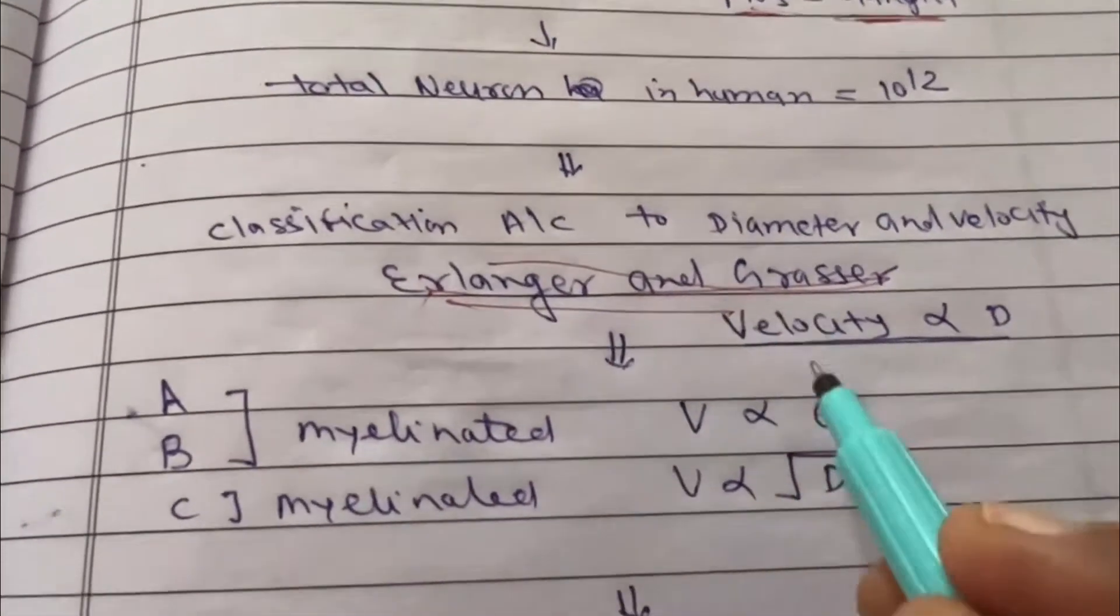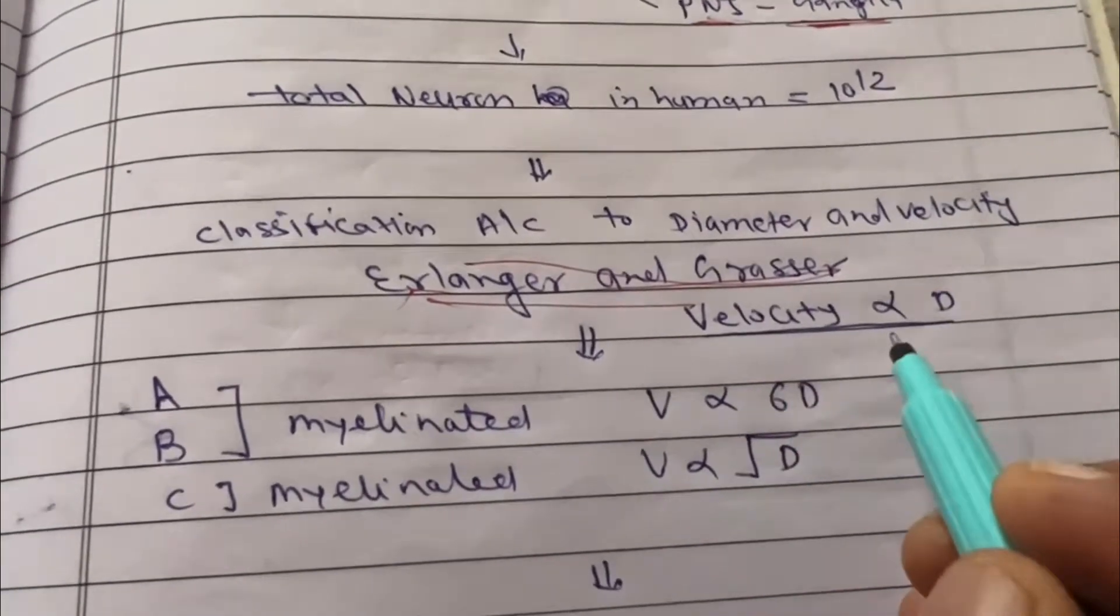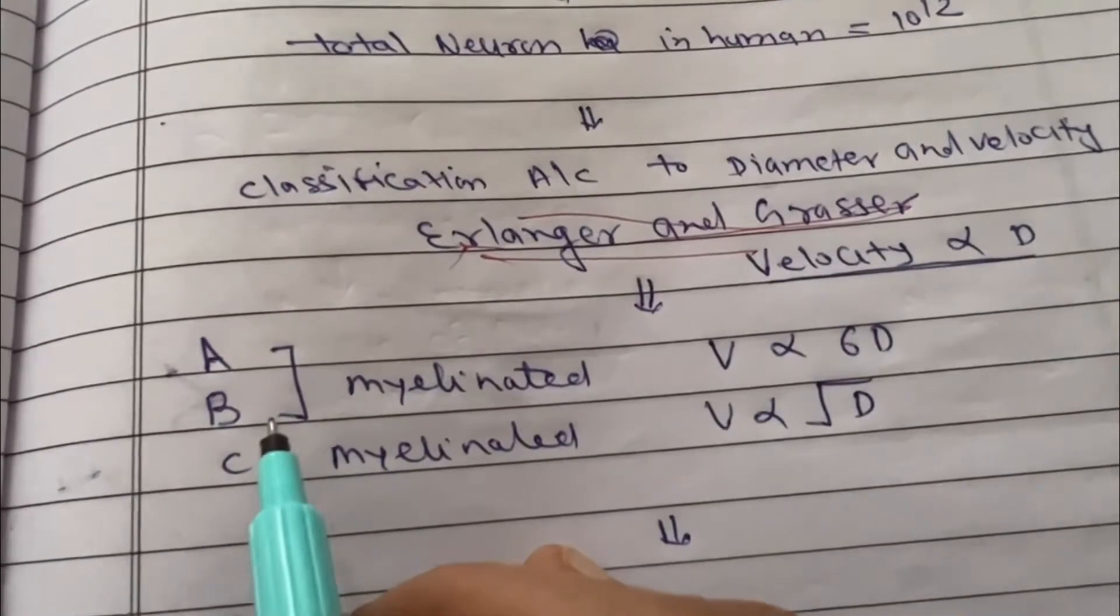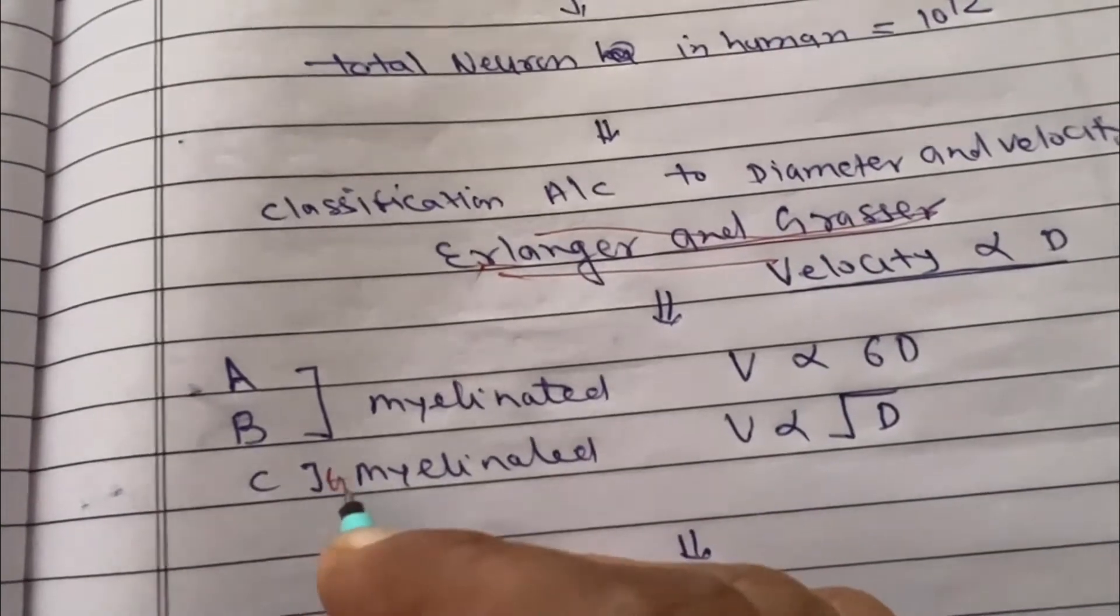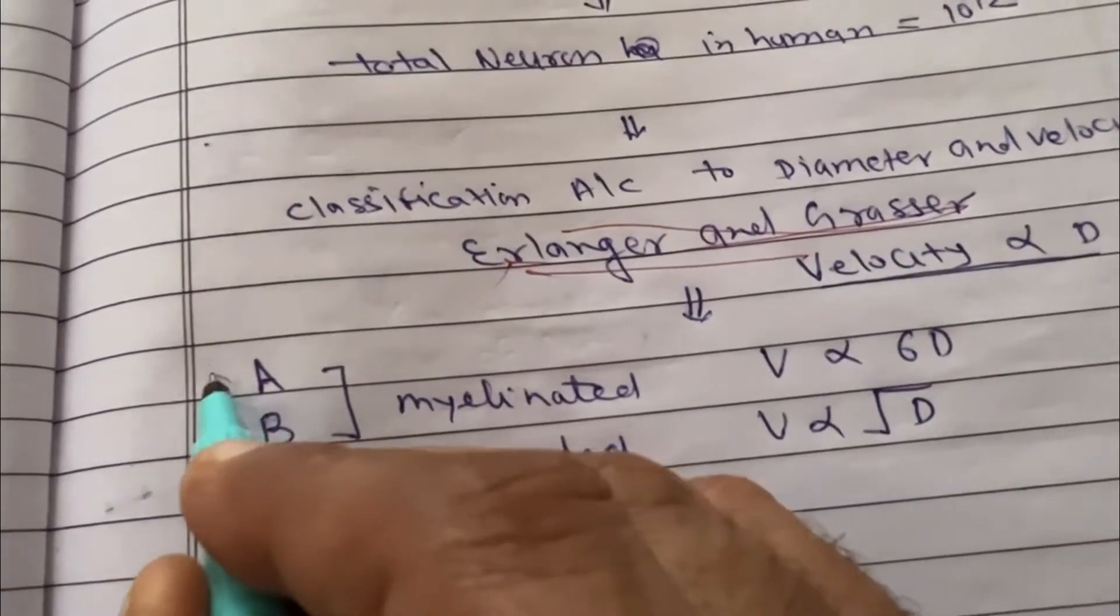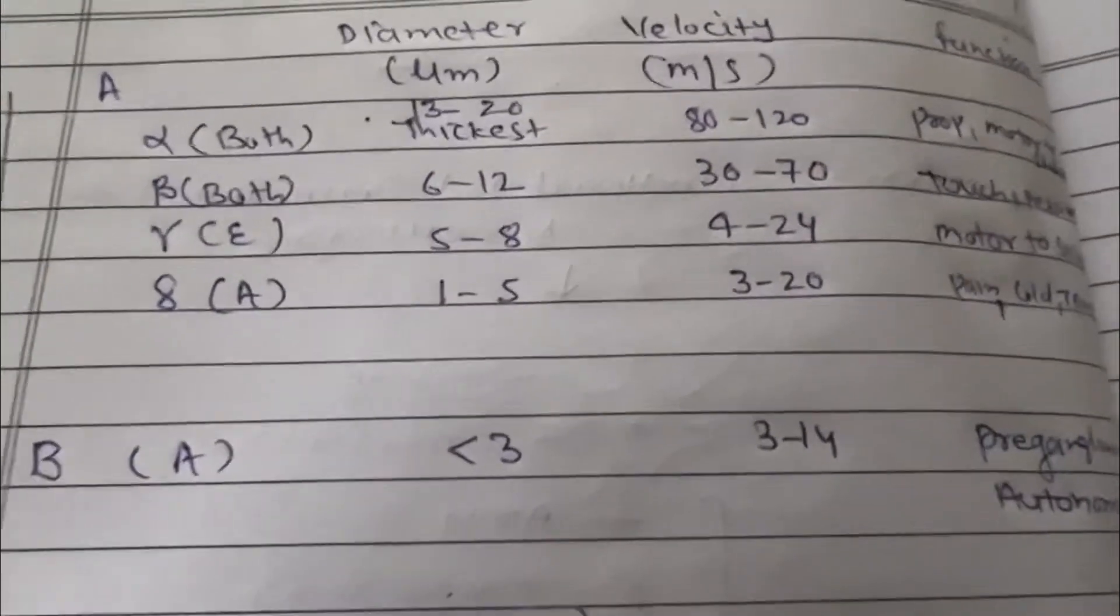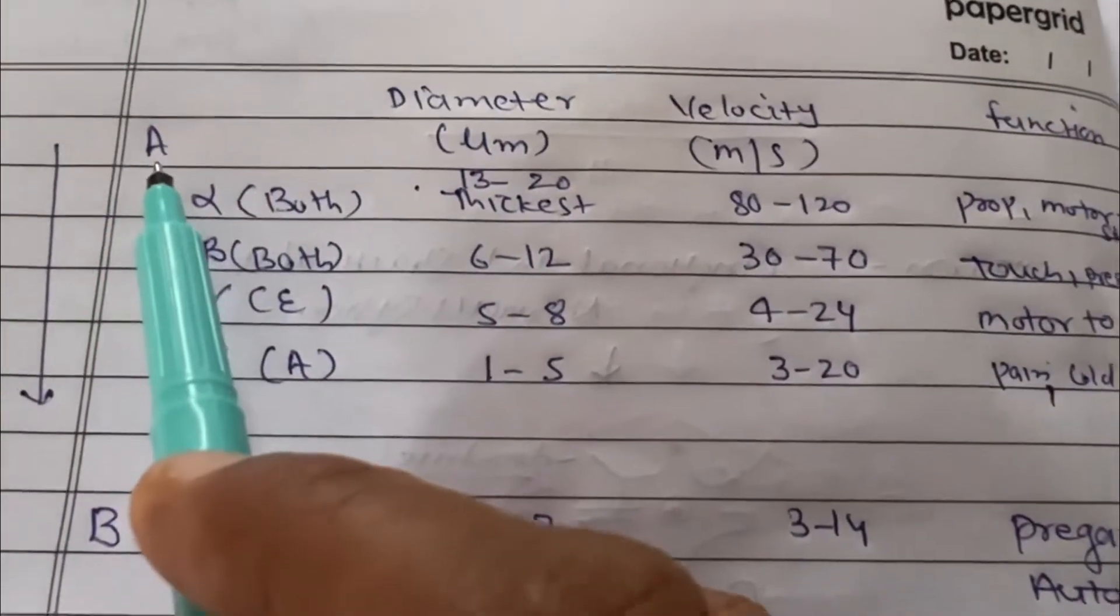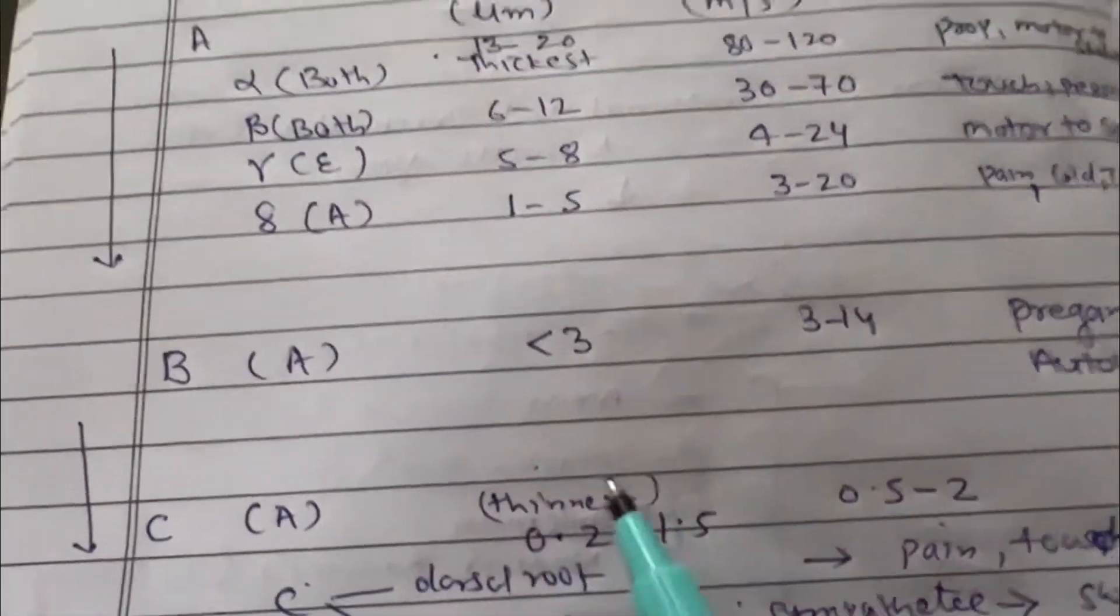Erlanger and Gasser divided nerve fibers into A, B, C types, three types, according to velocity and diameter. If you see, A and B types of fibers are myelinated, and C type of fiber is unmyelinated. This is according to diameter, this is descending order of diameter of nerve fiber. The classification: A type of nerve fiber has maximum diameter and C type has the thinnest, that is least diameter.